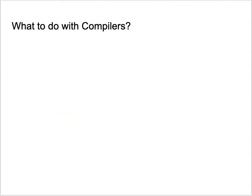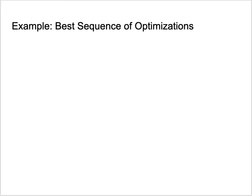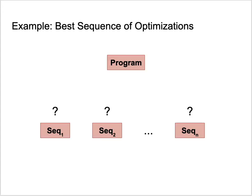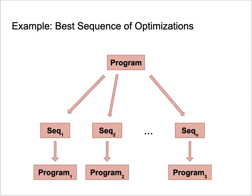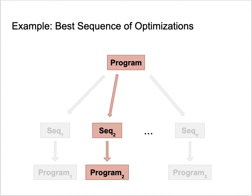Let me explain which properties we might want to predict about code. Given a program, what would be the best sequence of optimizations for it? We have a set of candidate sequences that are likely to produce different code for a given program, and we want to find the best one. We could apply all sequences and compare the results, but that is a costly process. The best approach is to look at the program and infer the best sequence from the analysis.